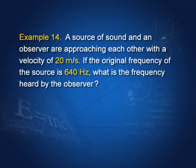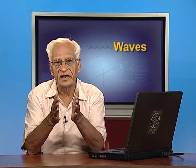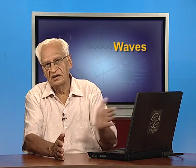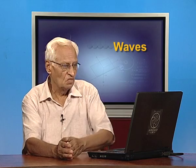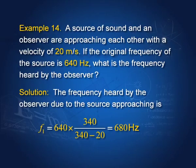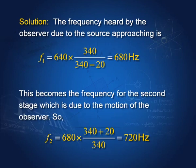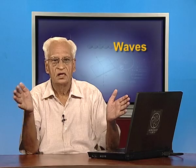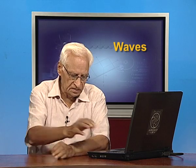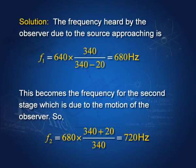Example: a source and observer approach each other, each at 20 m/s, with original source frequency 640 Hz. First apply source approaching: f₁ = 640 × 340/(340 − 20) = 680 Hz. Then apply observer approaching: f₂ = 680 × (340 + 20)/340 = 720 Hz. The order of applying the two effects does not matter; the same result is obtained either way.